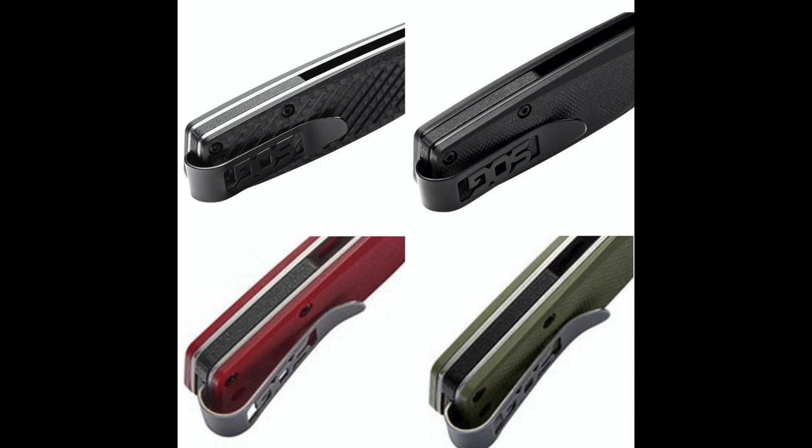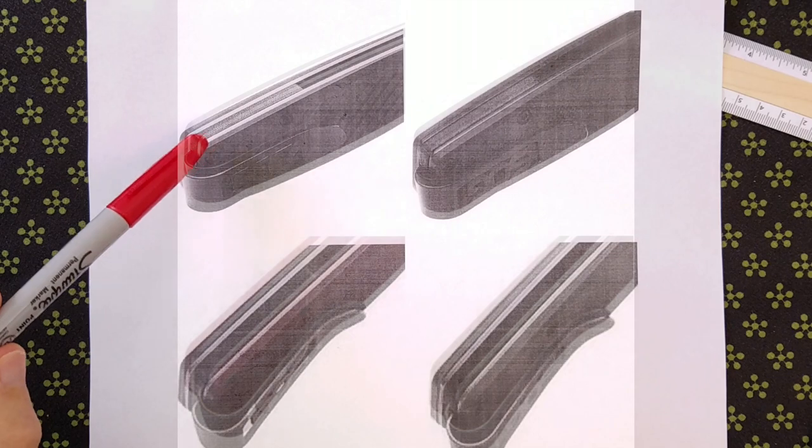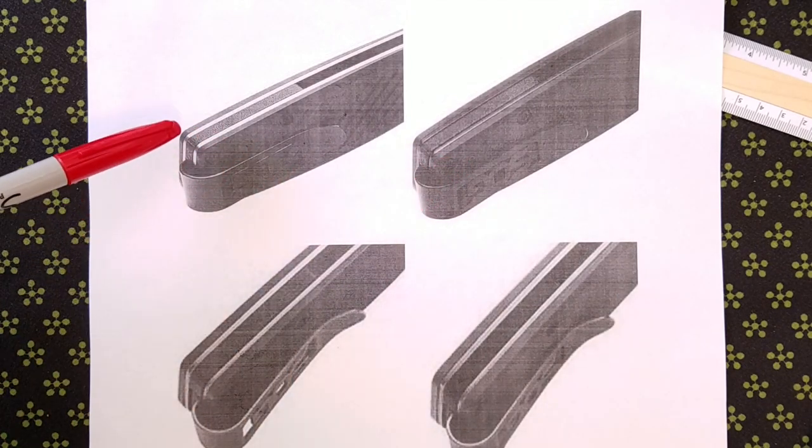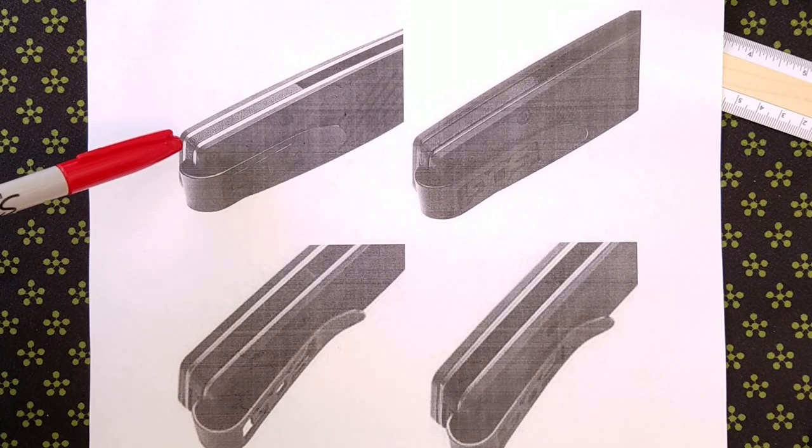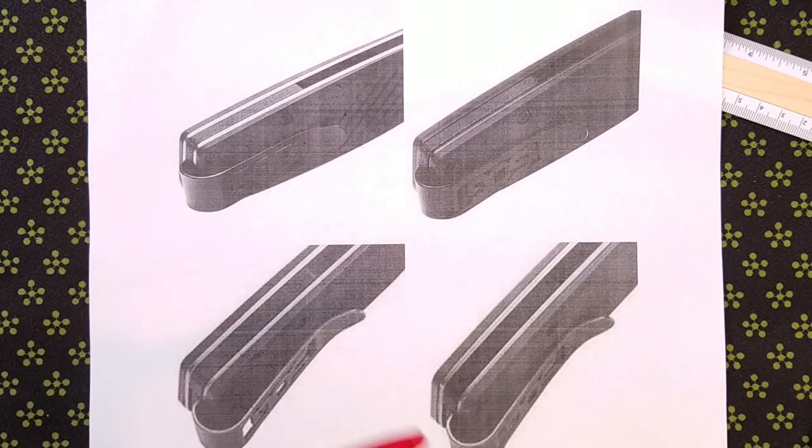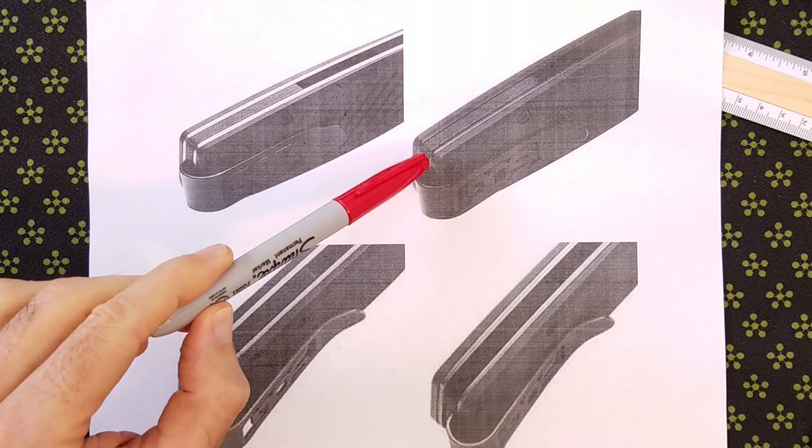If you take a closer look at these, they are different. On these two at the top, if you look closely, the pocket clip is inserted into the backspacer on the far side of where the clip contacts the handle.